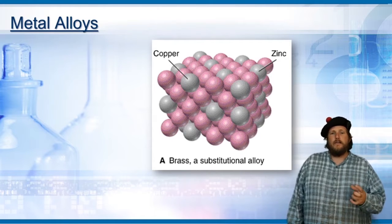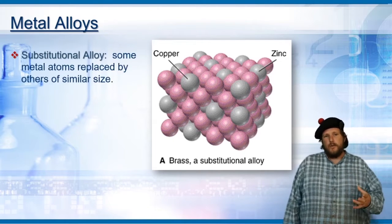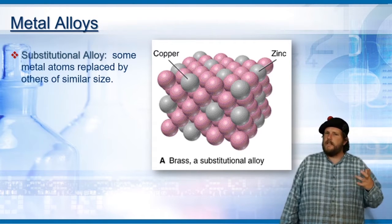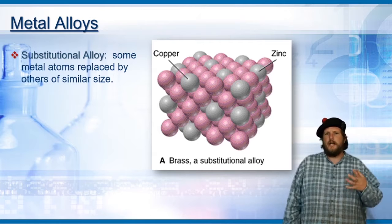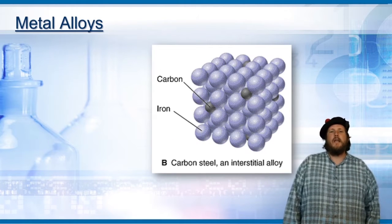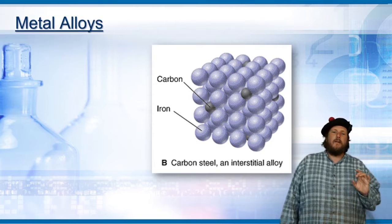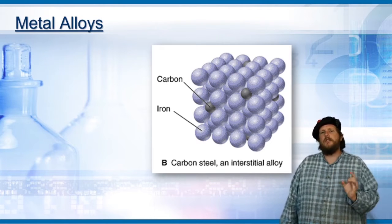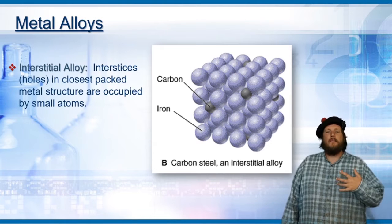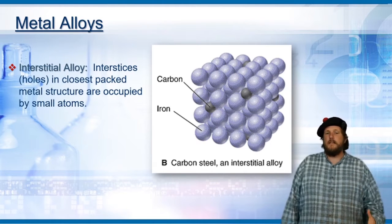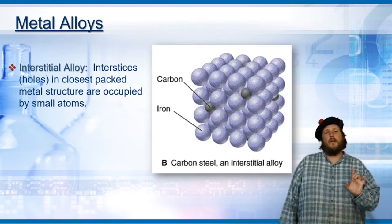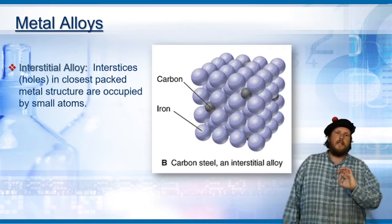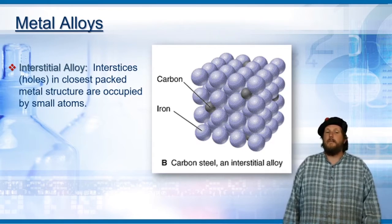Metal alloys come in a couple of different kinds. There's a substitutional alloy, where some metal atoms are replaced by others of a similar size — you still get the same kind of bonding, like copper and zinc in brass. There's also interstitial alloys, where an atom of another kind fits in between the spaces between those metal atoms. One of the most common is carbon steel, where carbon is an interstitial alloy with iron and fits in between those little spaces. The interstices are holes in the closest packed metal structure occupied by small atoms.